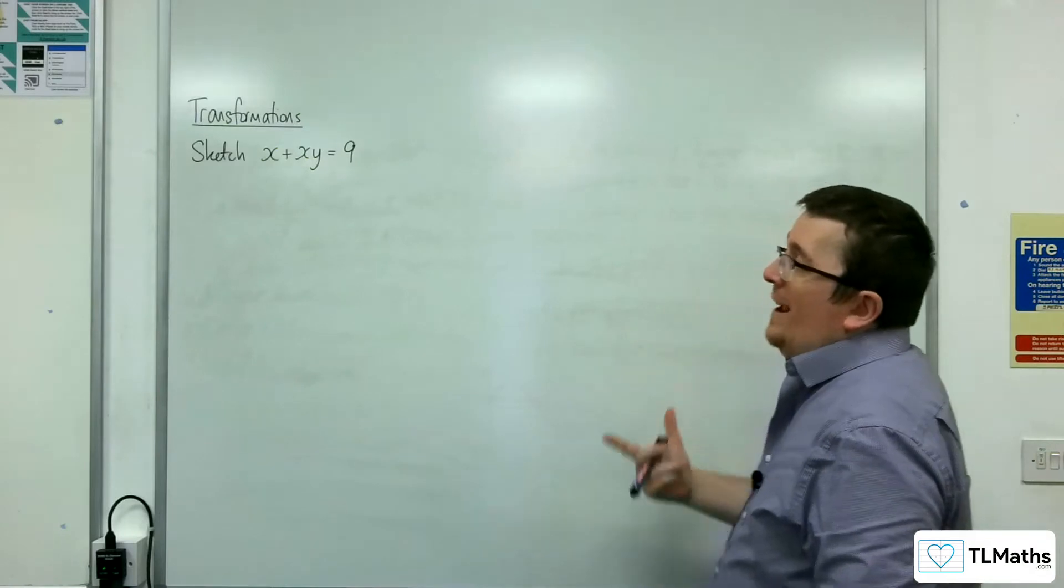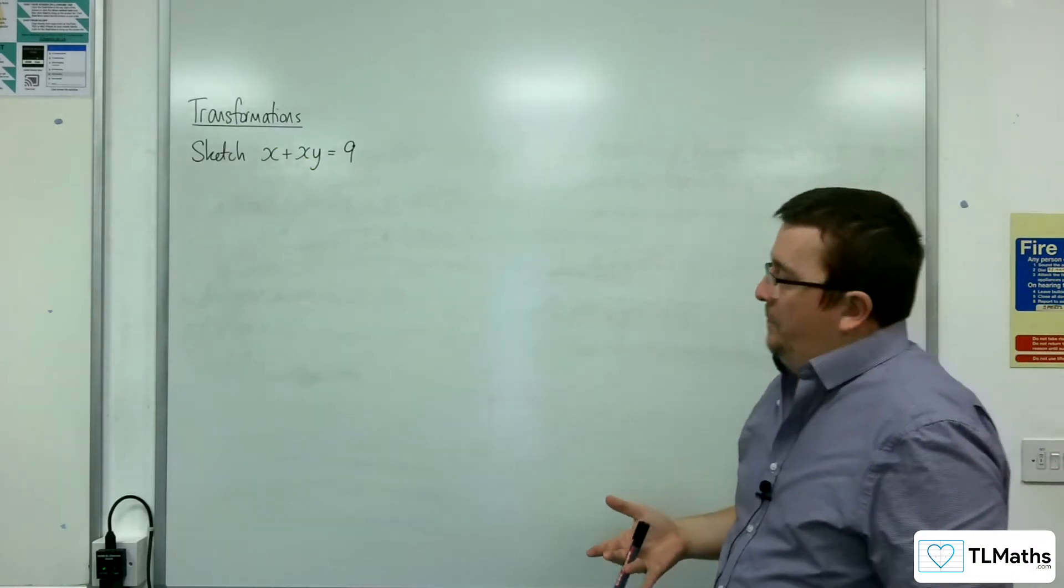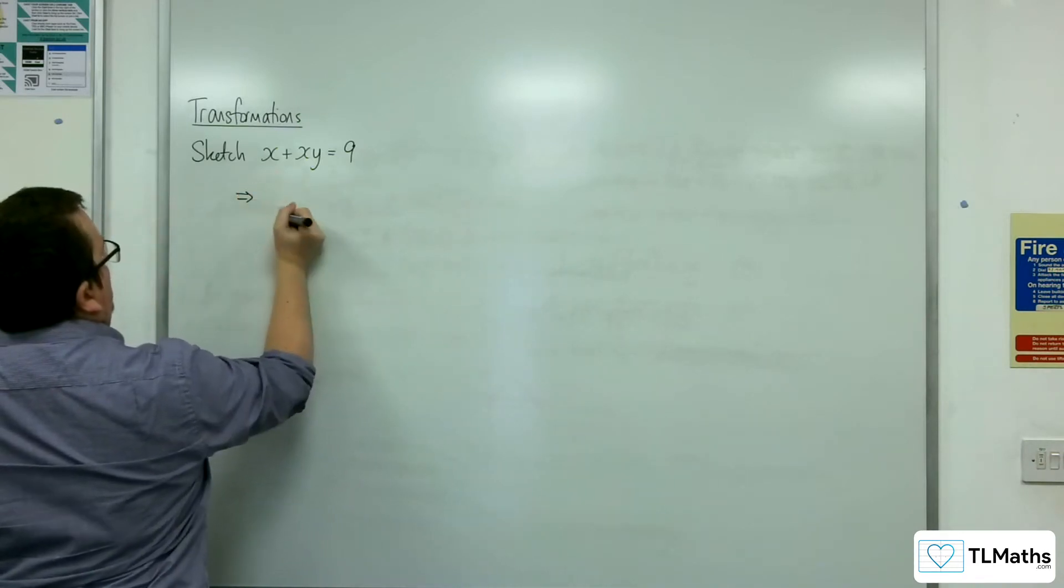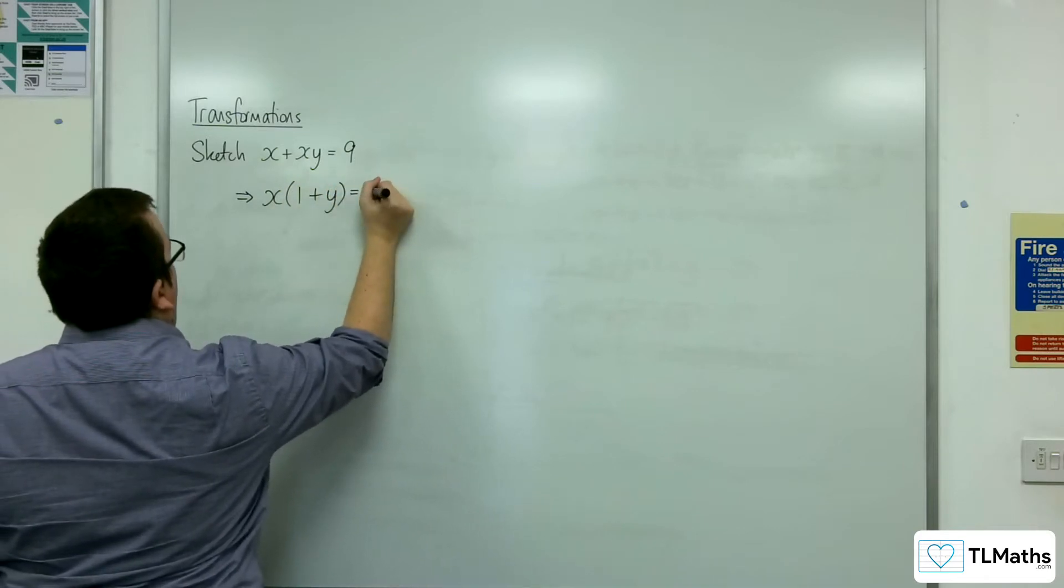In this video we're going to sketch x plus xy equals 9. The first thing you're going to want to do is factorize the left hand side. So we're going to write that as x times 1 plus y equals 9.